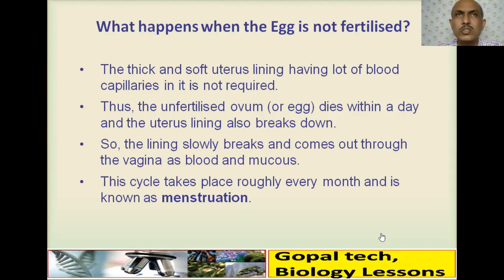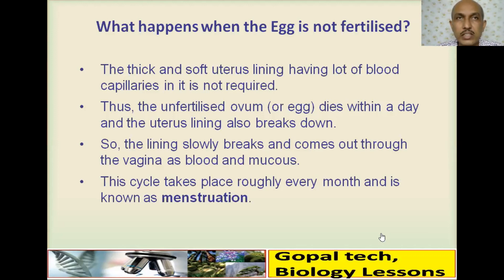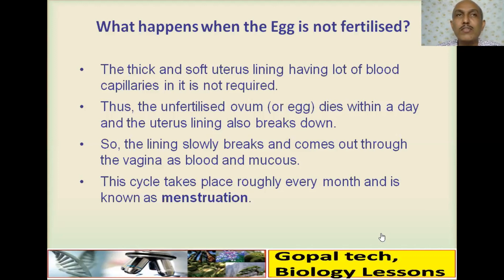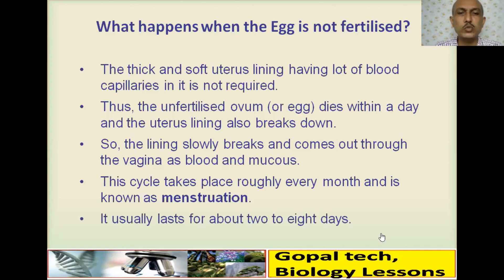An analogy: just as we prepare our home for a new guest who doesn't arrive, the uterus prepares for the embryo each month. When fertilization doesn't happen, 'the uterus starts weeping' — menstruation is also called 'uterus weeping.' This process lasts about two to eight days, generally three to five days. The womb lining (endometrium) sheds — that is menstruation — over days one through five.